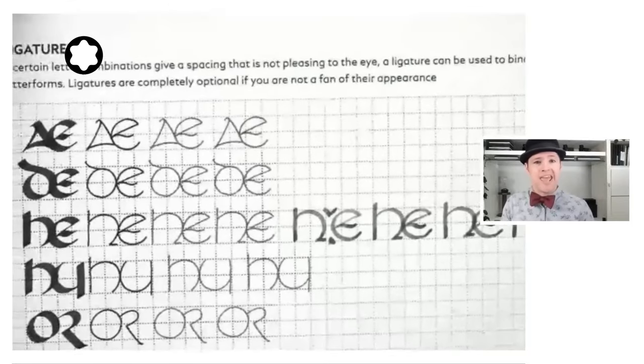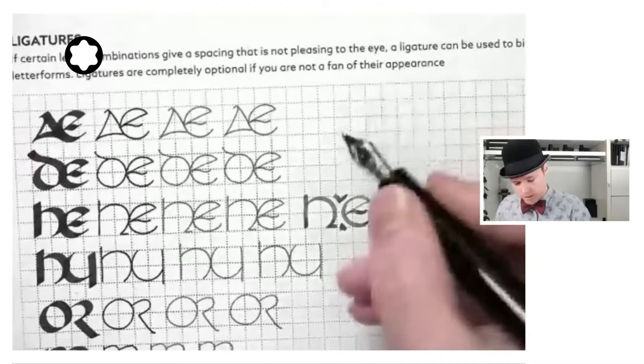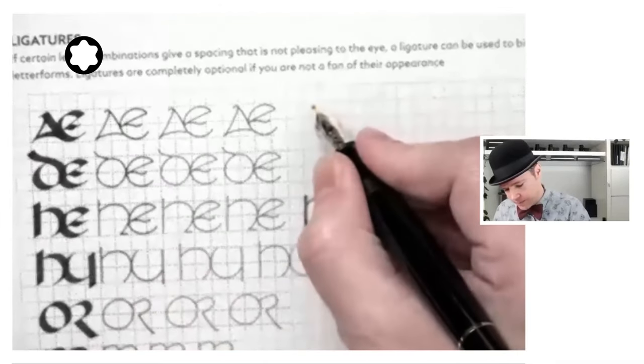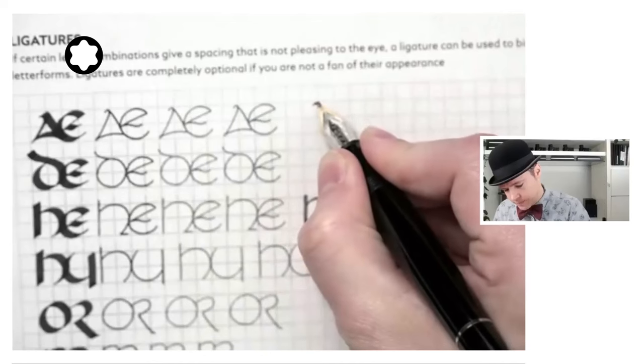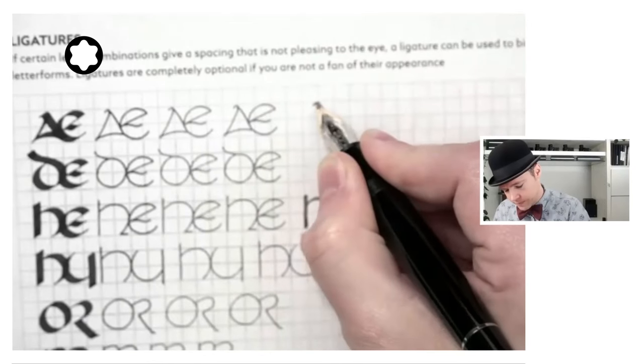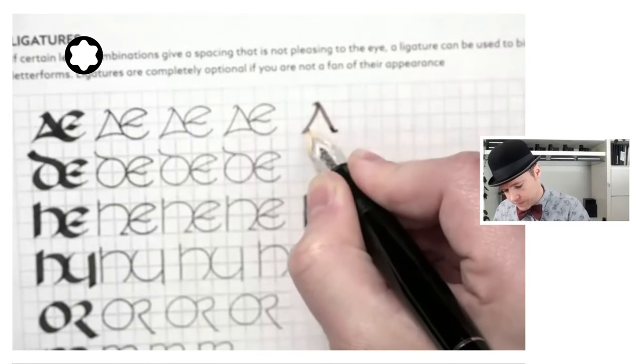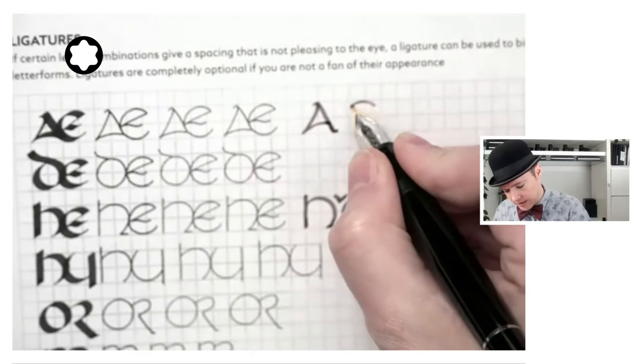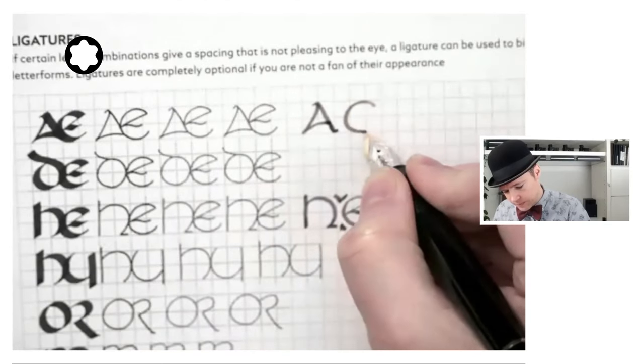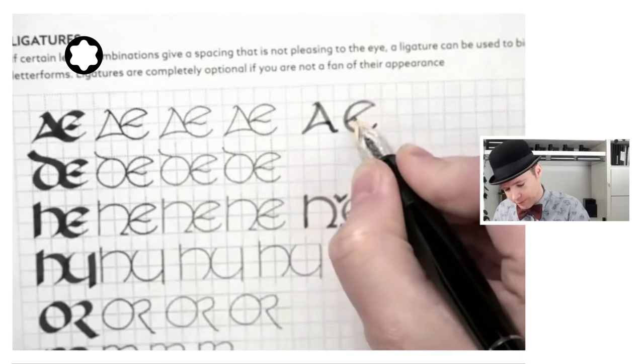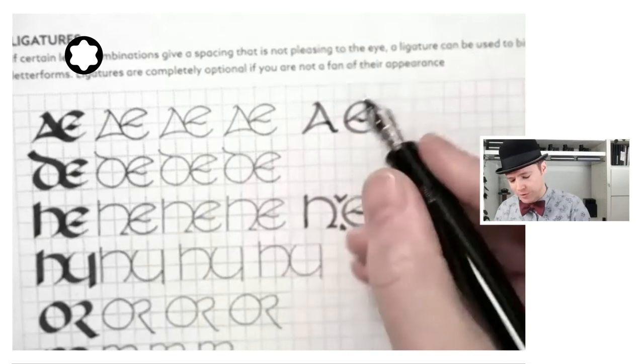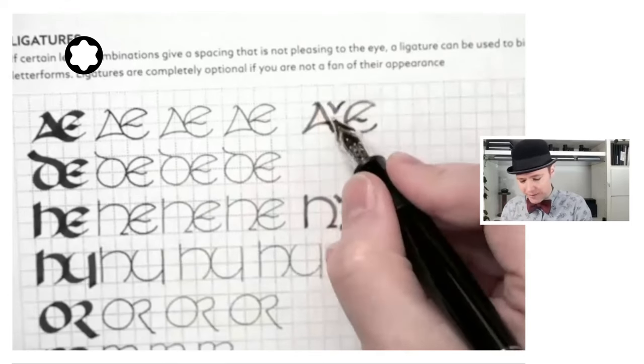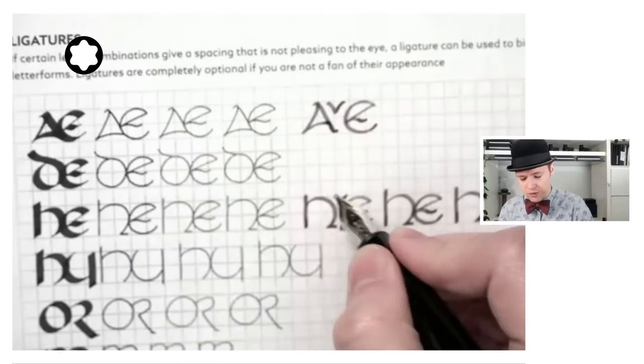We're going to go A and E. This is an interesting one. So we're going to write the standard A, and now when we do an E, if they weren't connected, now I did write those a little bit farther apart than I probably should have. But in the A and E, because the A is angled, we get even a bigger space than we do with the two circular forms.